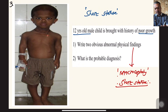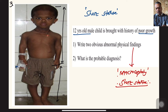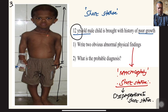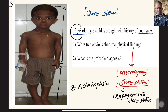Looking at the ratio from the vertex to the pubic symphysis versus pubic symphysis to heel: in this 12-year-old, the upper segment looks much longer than the lower segment — the lower segment is much shorter than the upper. This is a clear-cut case of disproportionate short stature, specifically where the lower segment is shorter than the upper segment.